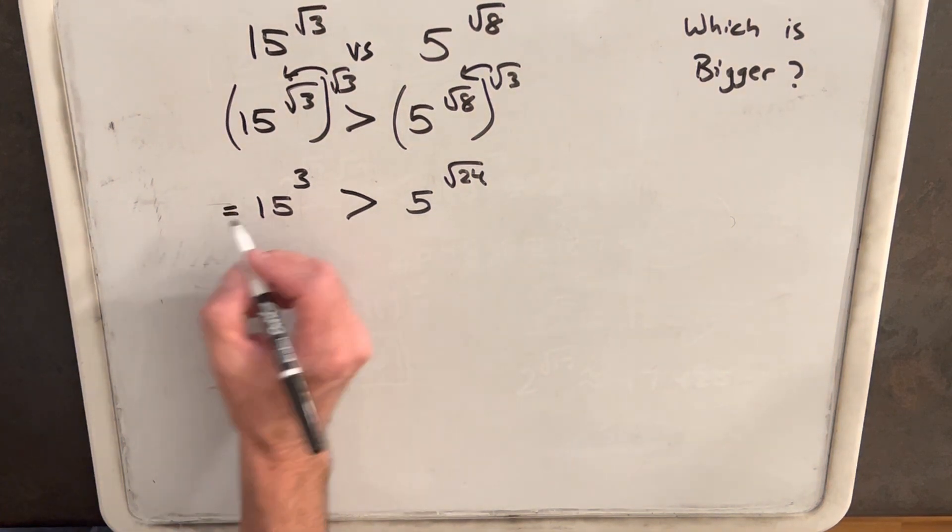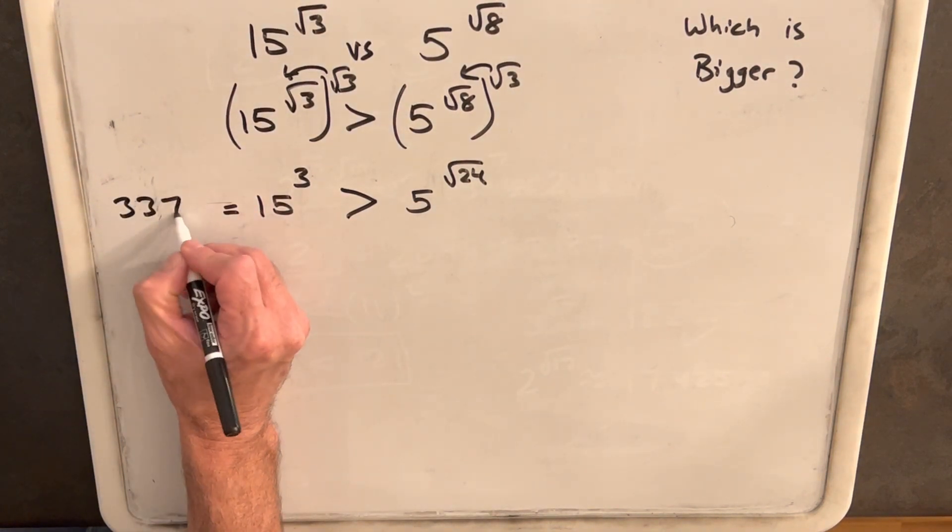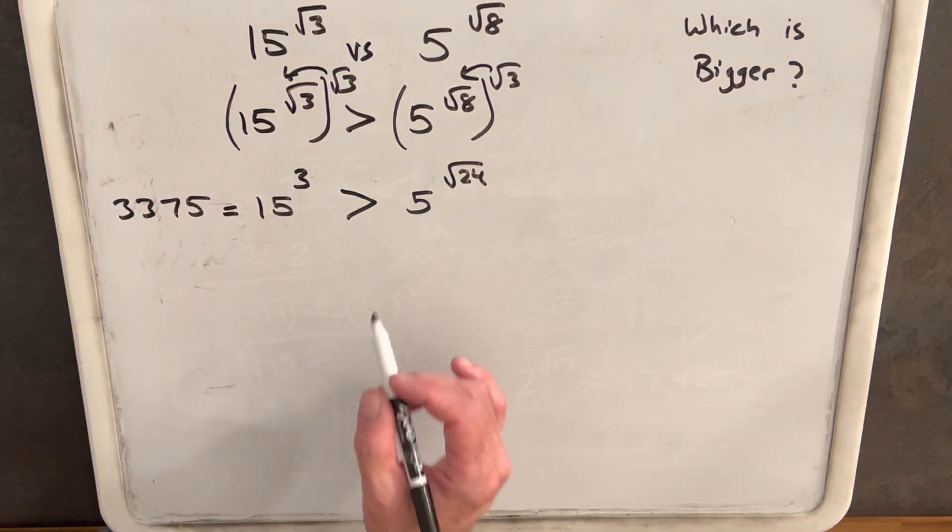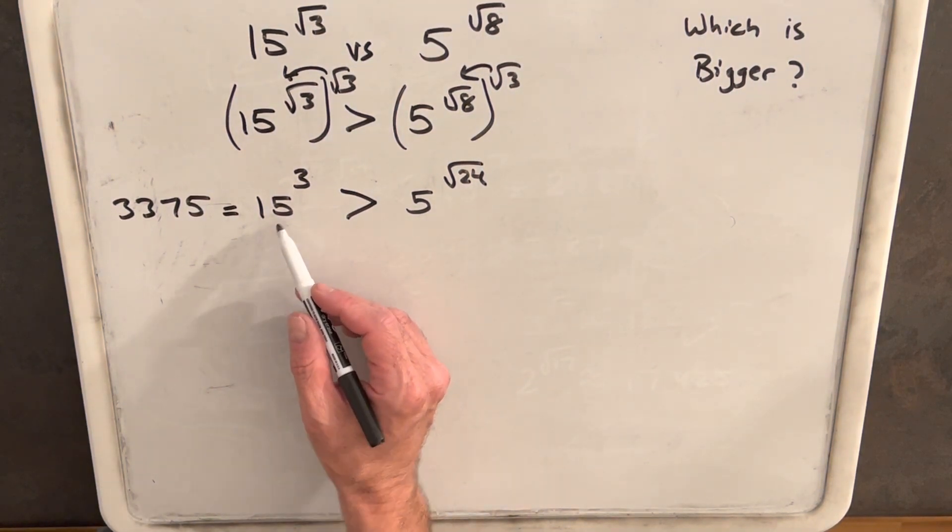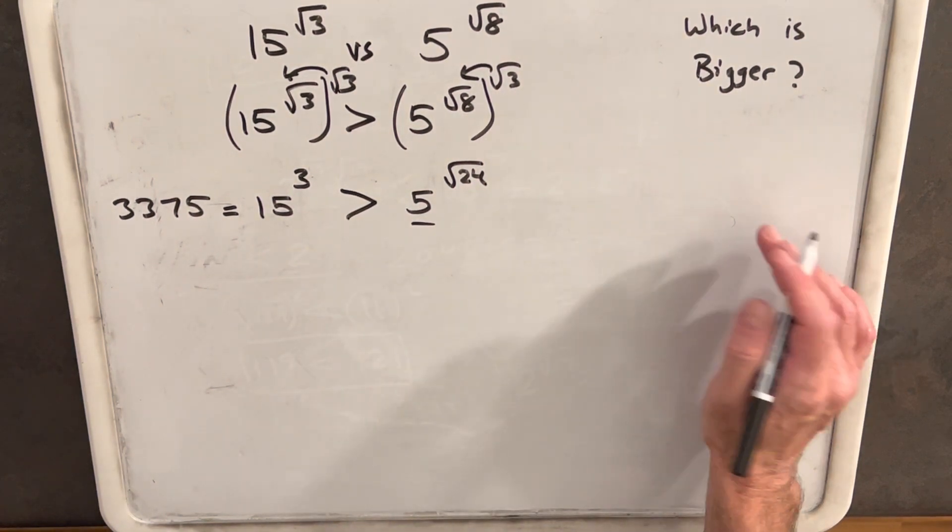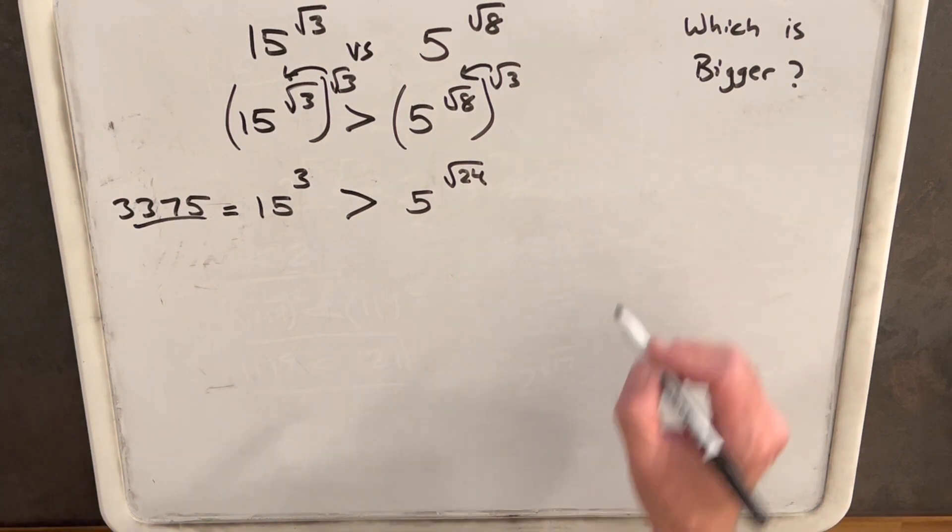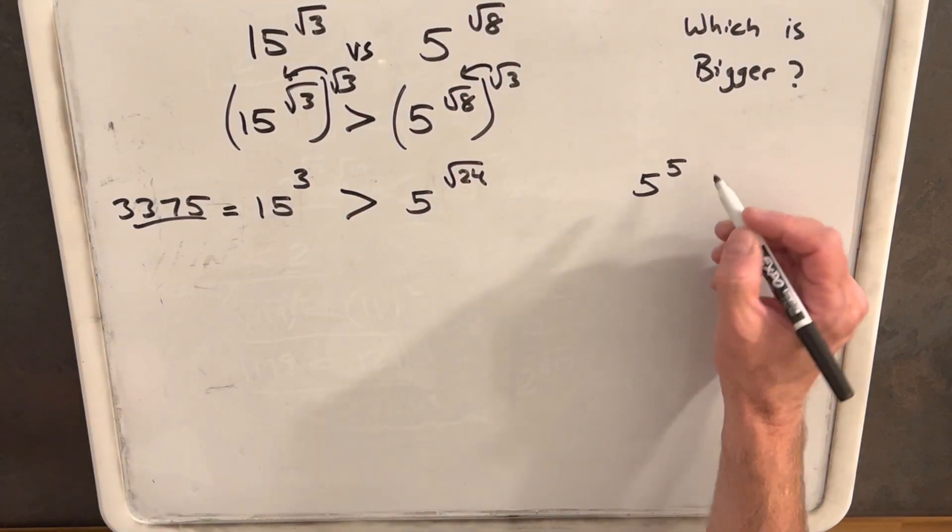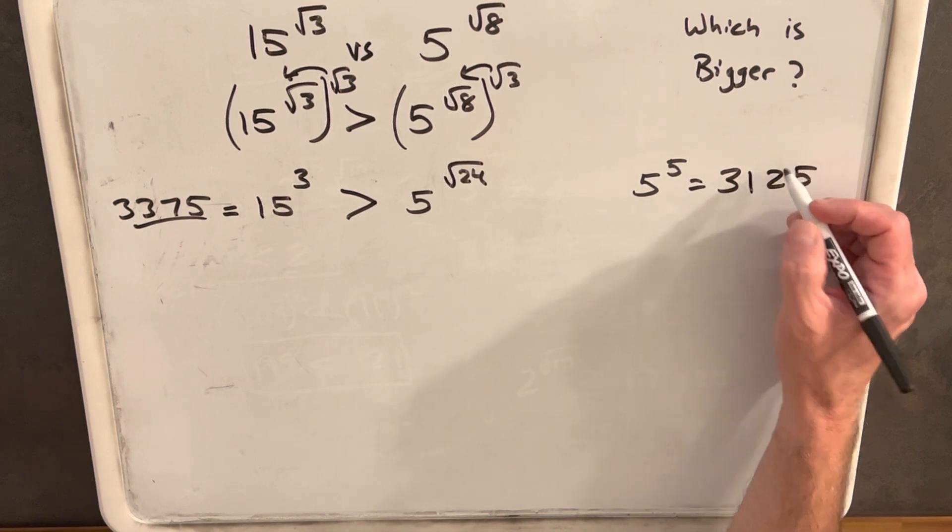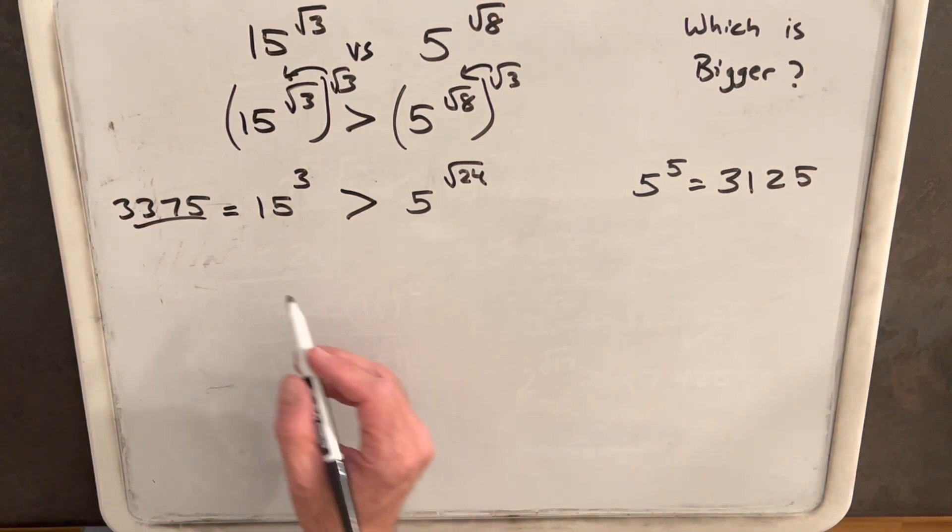Now 15 cubed is just 3375. At this point we want to find a good way to compare 3375 to a power of 5. We're going to want something probably pretty close. Now I think what we want to use here is 5 to the 5 which equals 3125. That's going to be pretty close and a good way to compare this.